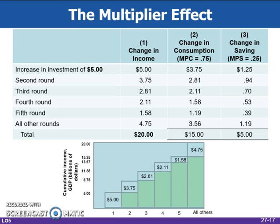Such income increments over the entire process get successively smaller, but eventually produce a total change of income and GDP of $20 billion. The multiplier, therefore, is 4, which is $20 billion divided by $5 billion.